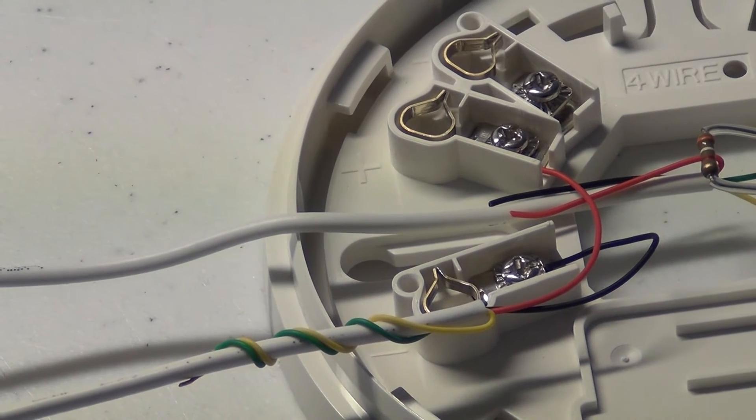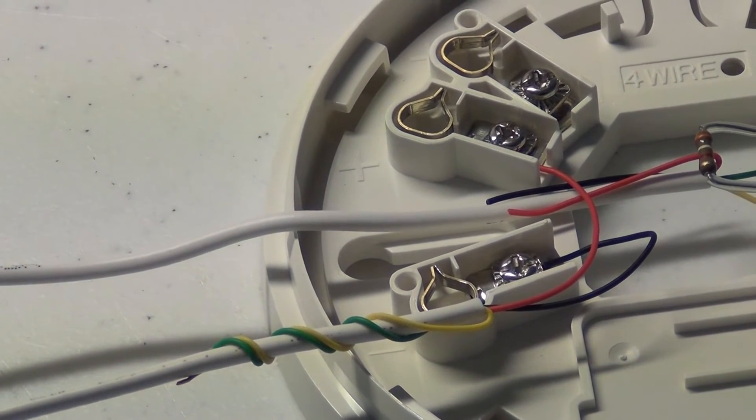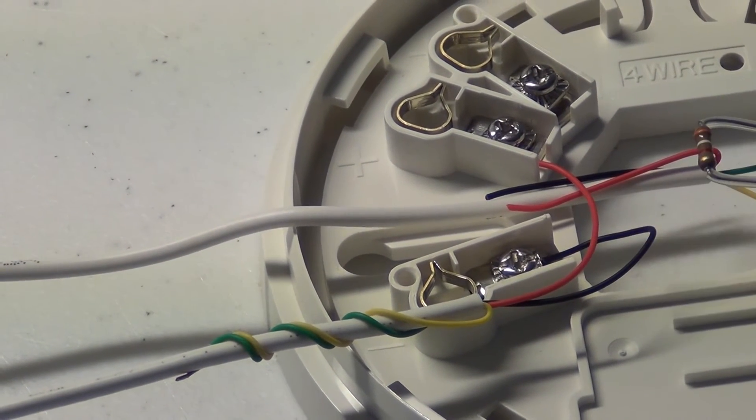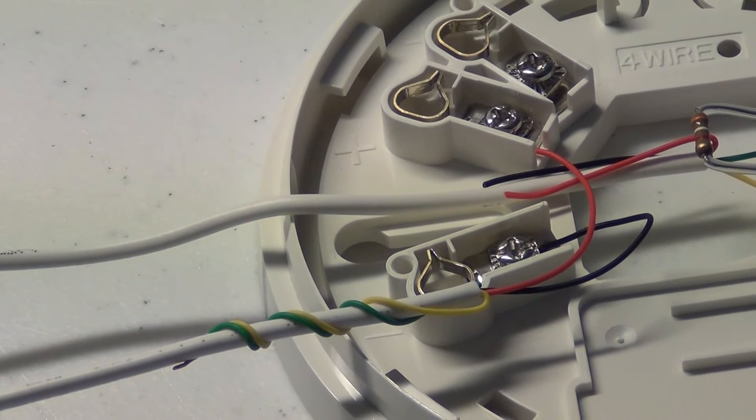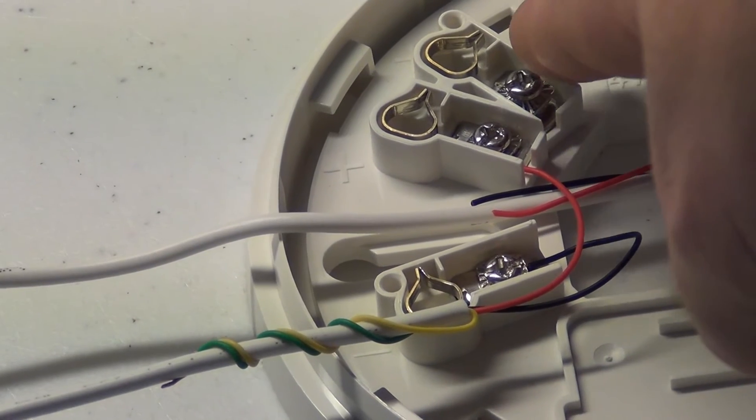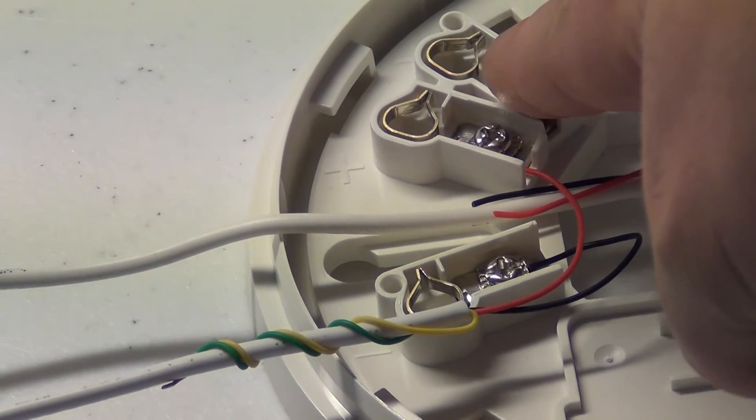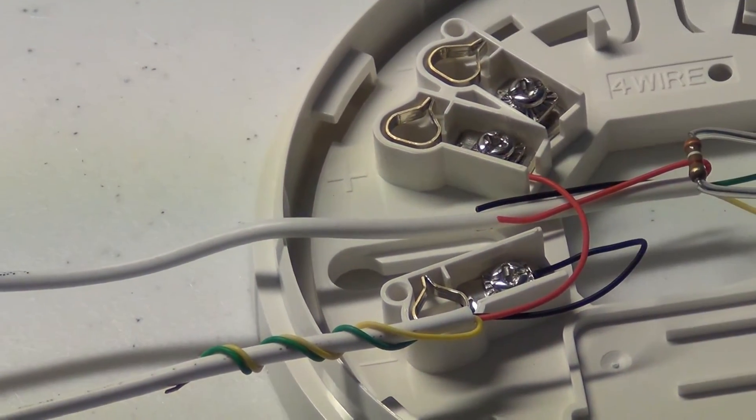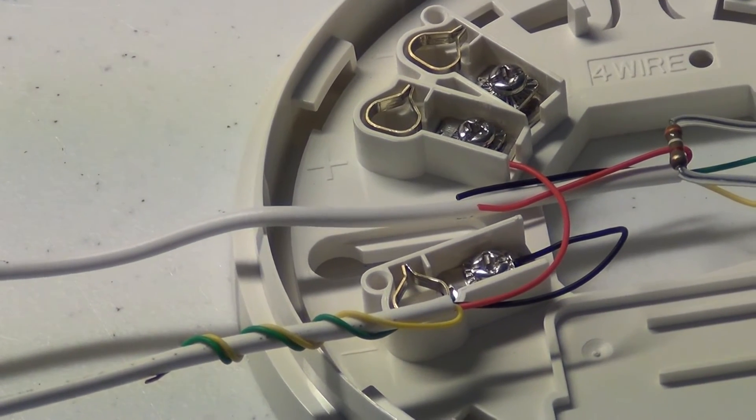Out from there you are going to run your negative to the next negative on the next smoke CO and then from your first smoke CO you'll come for your positive to your next one, you'll come off this second positive post. So you just run them like that.